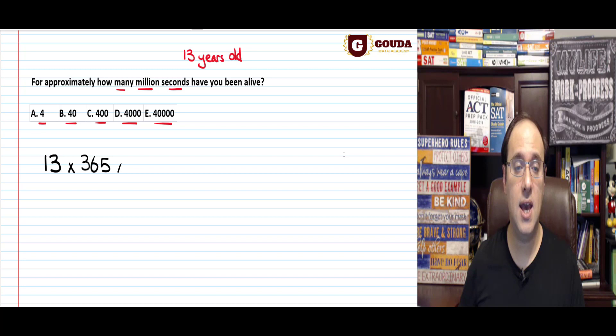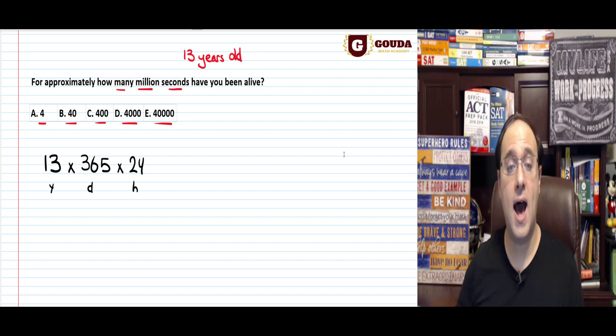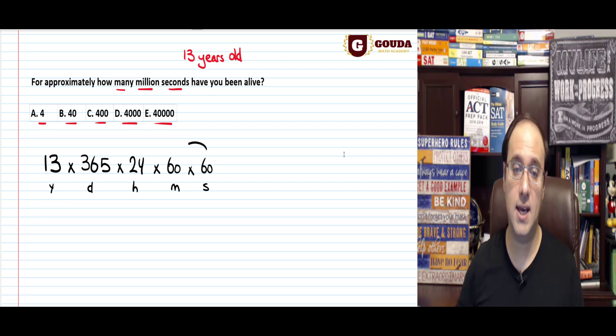Each day has 24 hours. This is how many hours old I am: 13 years times 365 days times 24 hours. How many minutes are in an hour? 60 minutes. This is how many minutes I'm alive. Times another 60 because we have 60 seconds in a minute. So 60 seconds in one minute, 60 minutes in one hour, 24 hours in one day, 365 days in a year times 13 years.